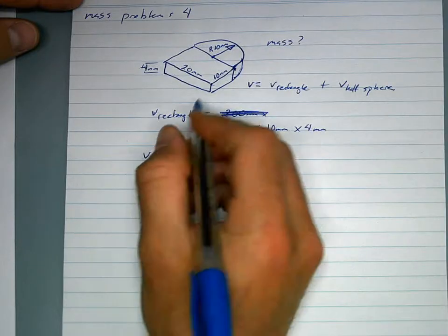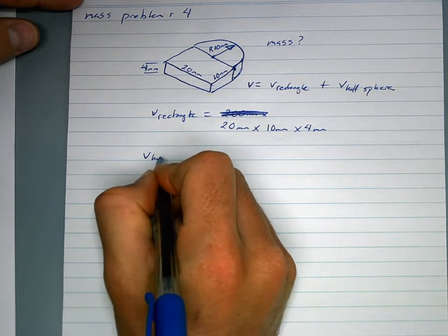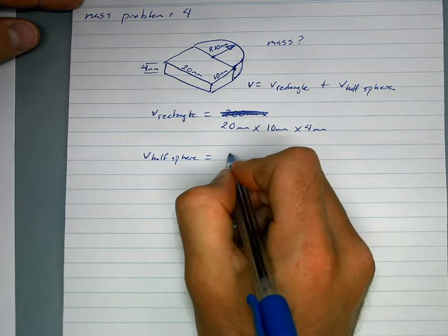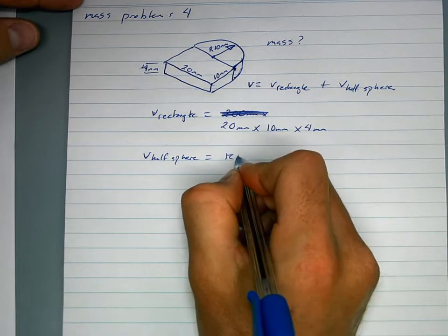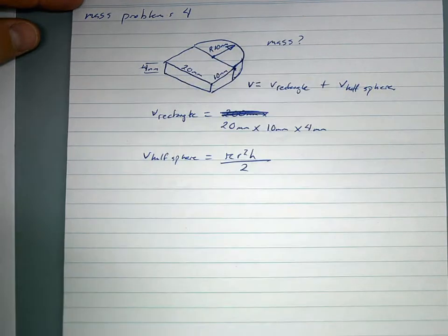And our volume of our half circle, or half sphere, is equal to pi r squared h, and then you've got to divide it by 2 because it's only half of a cylinder.